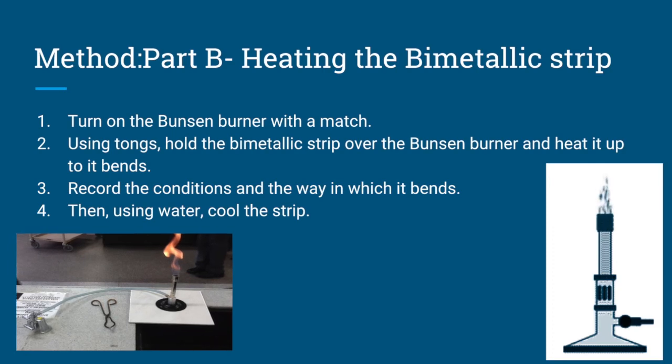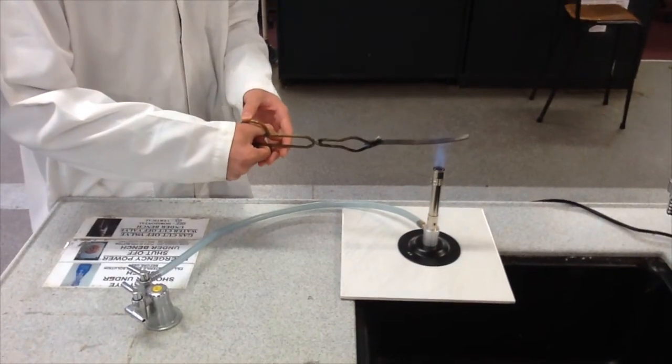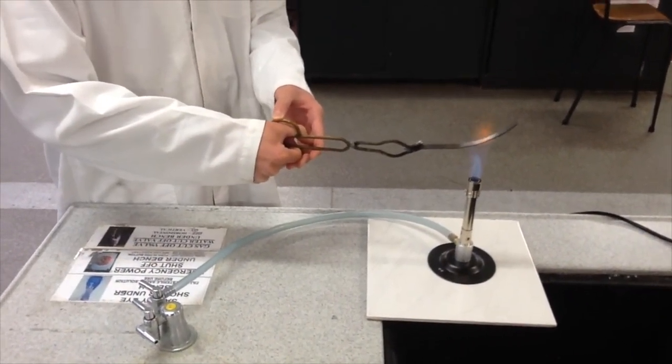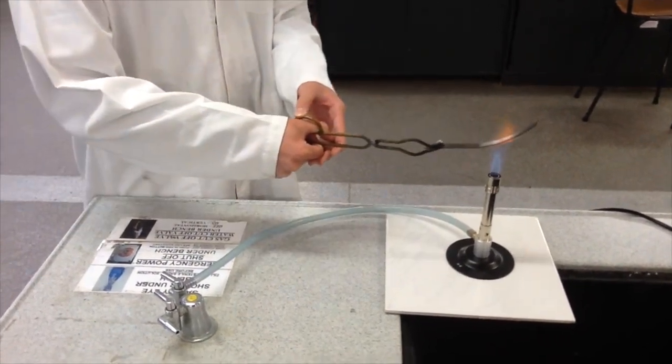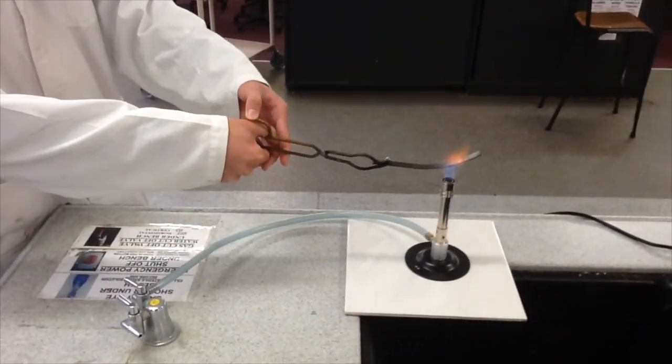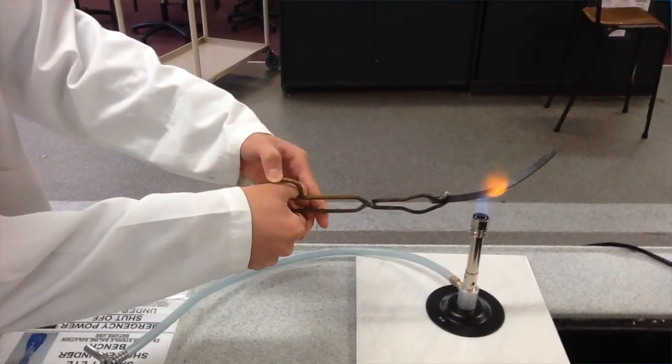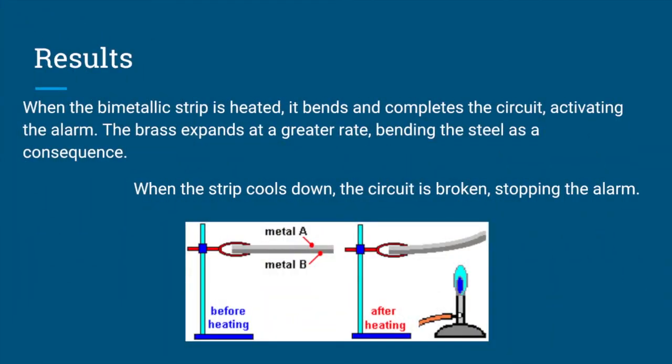Step 4: Then, using water, cool the strip. Results: When a bimetallic strip is heated, it bends.